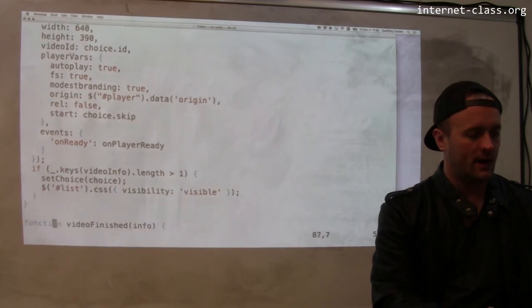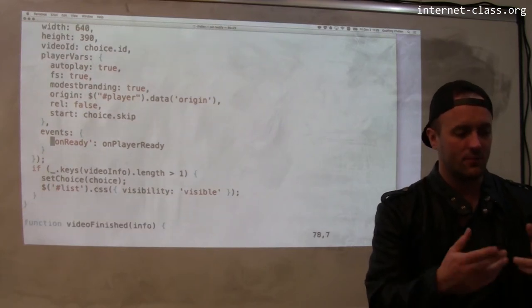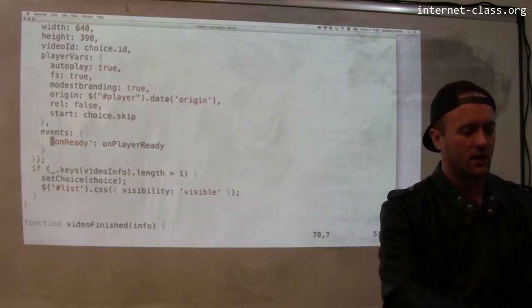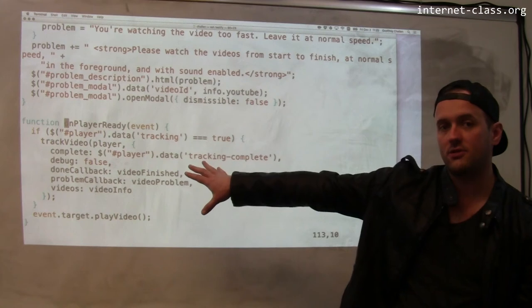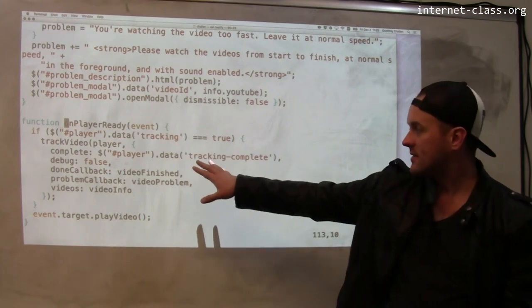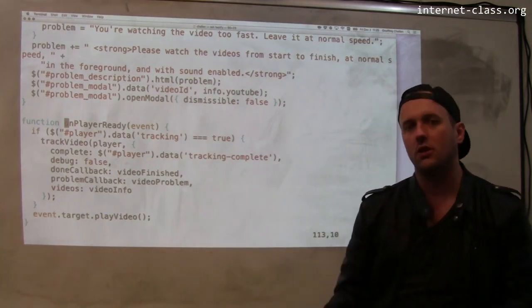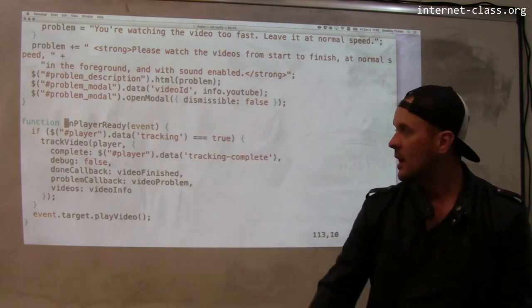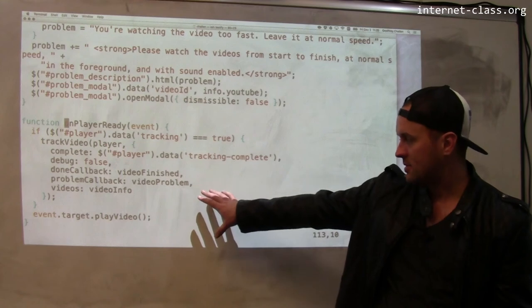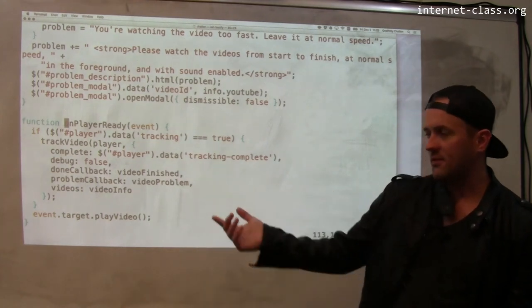So what happens is when the player begins to play, when the player is loaded, it calls this on player ready callback. And what that does is it actually launches the video tracker. So what it does is if I'm tracking the video, now once you've seen the video one time and you go back to review it, the tracker is disabled and so none of this code runs. But if I'm tracking this particular video, then I call this track video function.